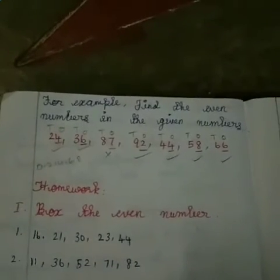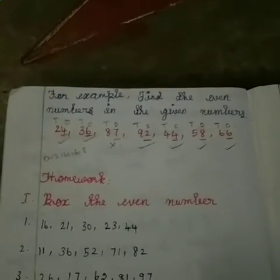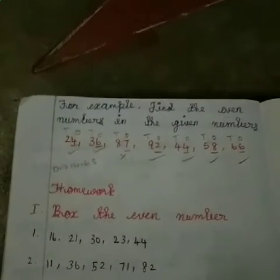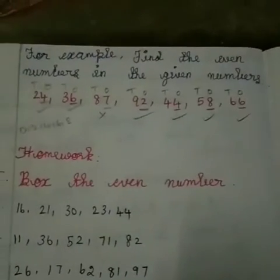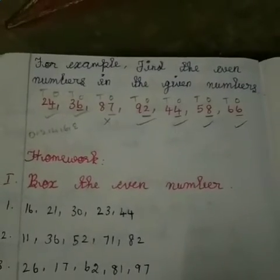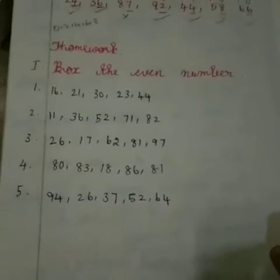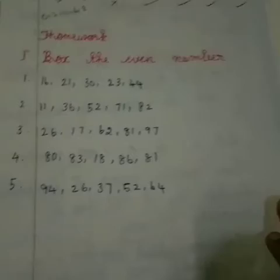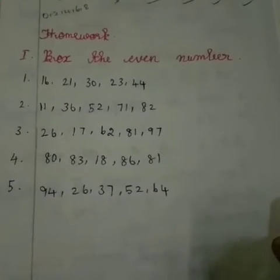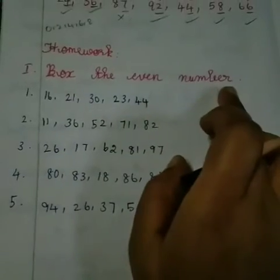No matter how many digits are given, there is no problem — you have to consider only the ones place. If the ones place is a one-digit even number, the total number is called an even number. Now I will give you the homework for today. Today's homework is to box the even numbers.